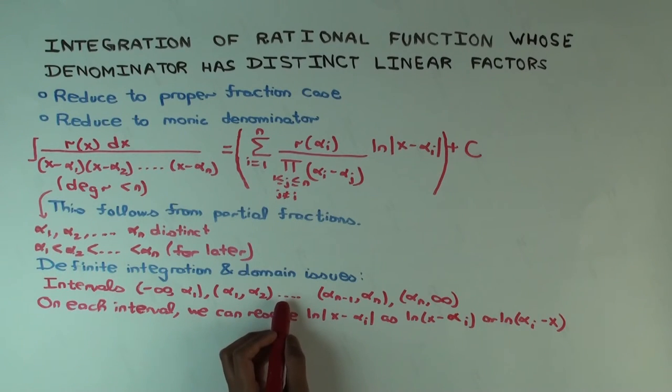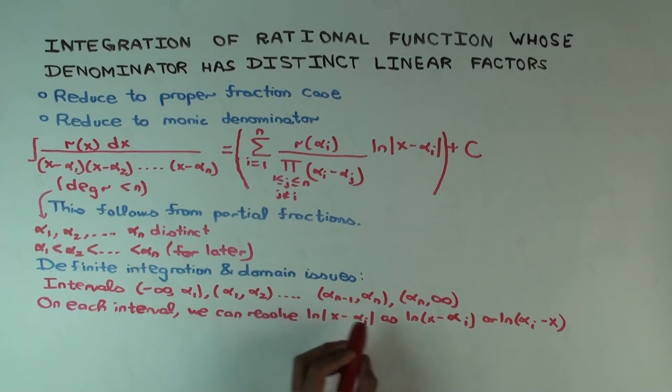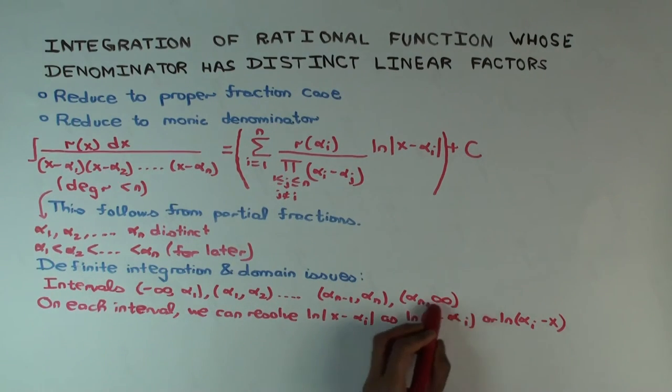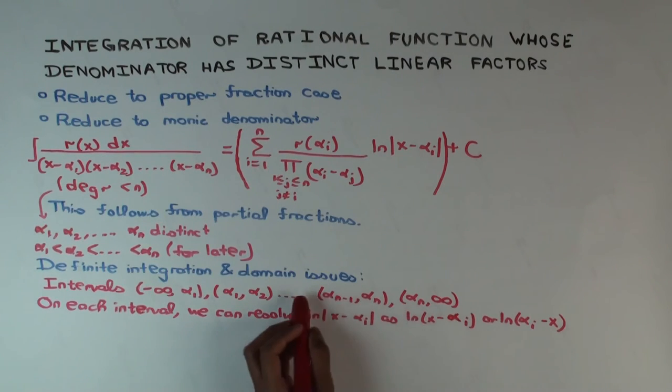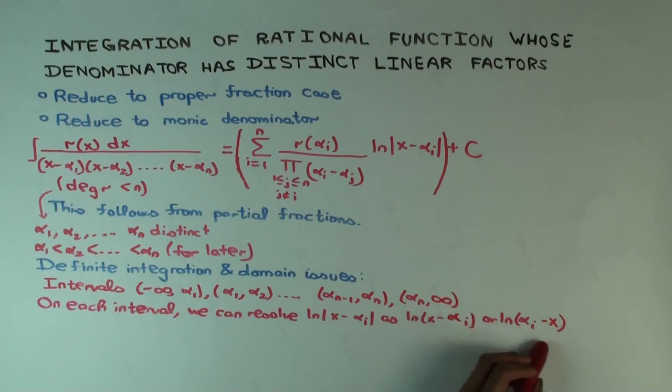Then x - α₁ and x - α₂ are positive, so for those you'll use this form. Whereas x - α₃ and all the higher ones are negative, so for those you'll use this version.